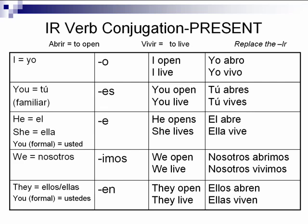There are a couple ways to say 'you' depending on whether or not you're familiar with the person. If you are, you use tú. So 'you live' would be tú vives. For él, ella, usted, you use e — so 'she lives' would be ella vive. The nosotros form uses imos, and this is the only form different from the ER verb conjugation; the ER uses emos. So 'we open' would be nosotros abrimos. And lastly, ellos, ellas, and ustedes use en — so 'they live' would be ellas viven.